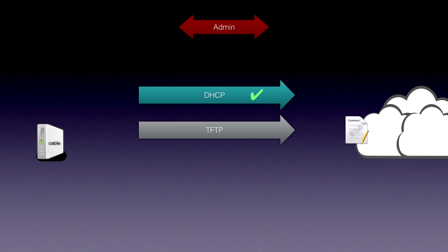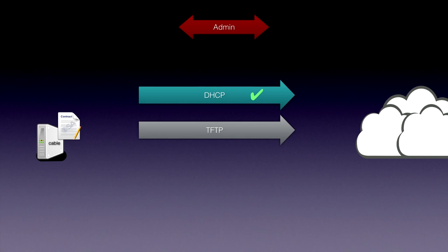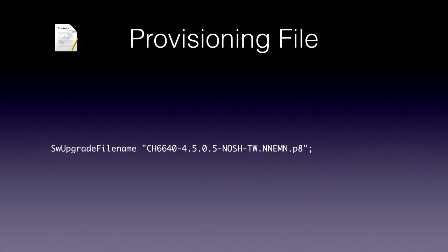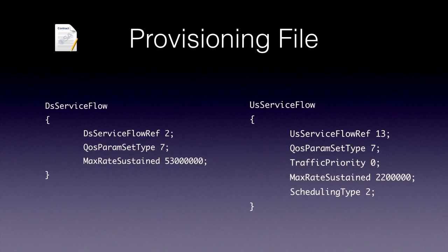You receive a configuration file — what they call the provisioning file — via TFTP to your cable modem, and then the modem is configured. What's inside? Interesting information like: what is your firmware update filename called, if the provider wants to update your firmware, and also how much bandwidth you have. I hear people have been playing with that one.